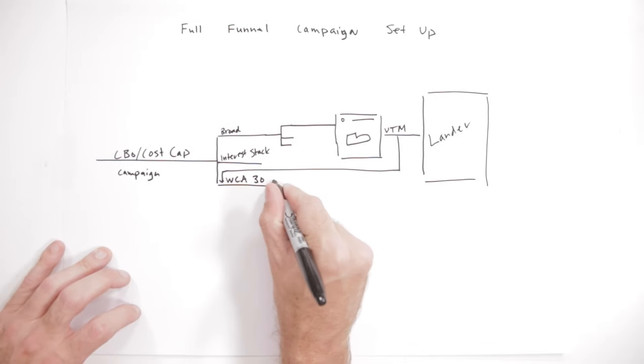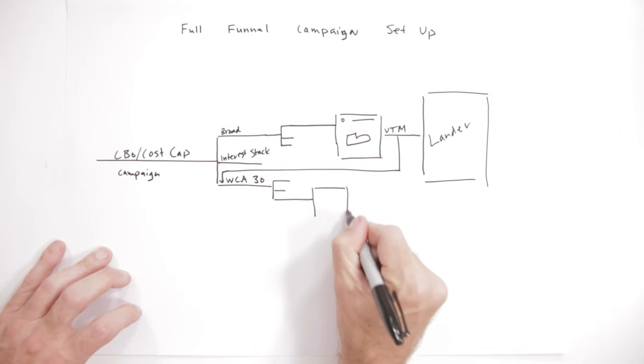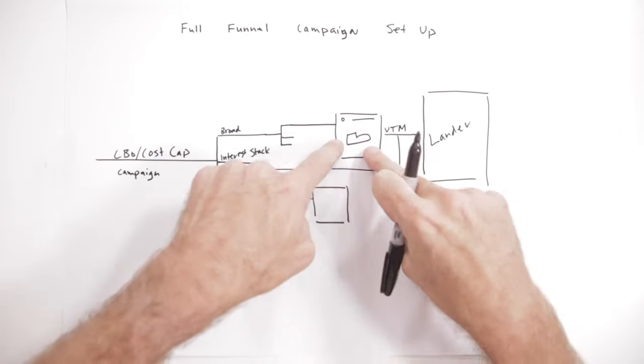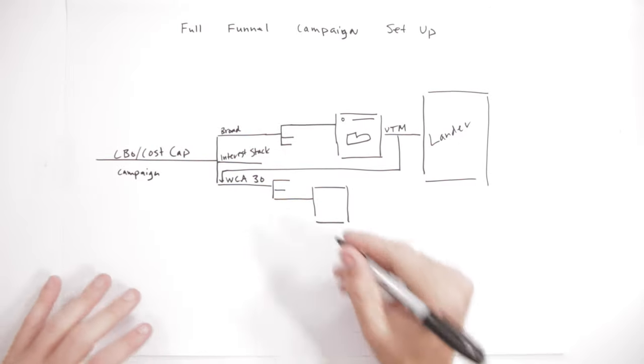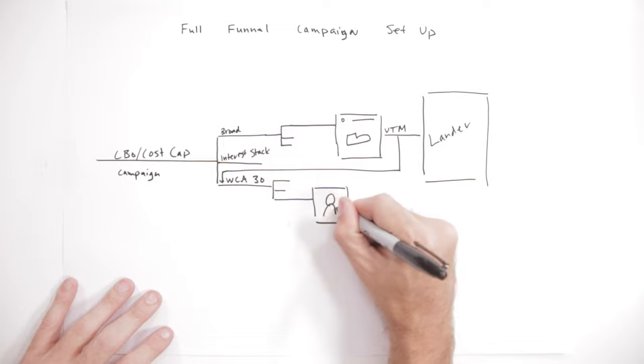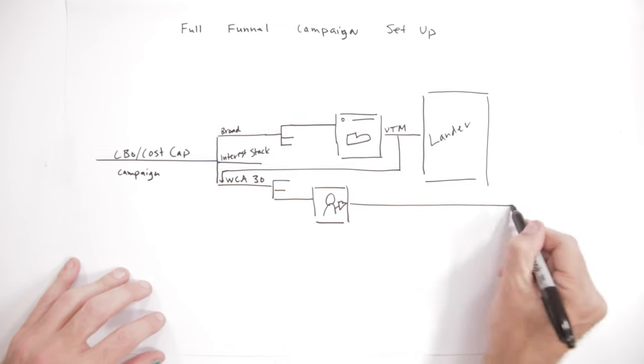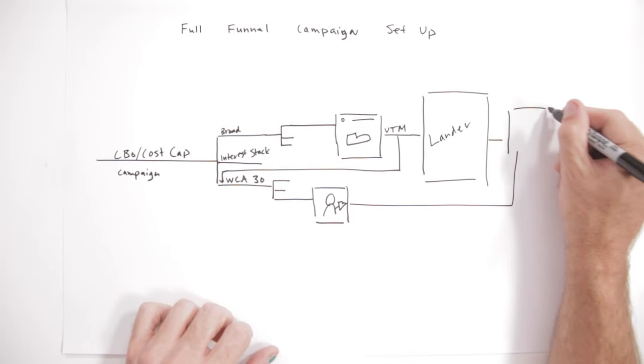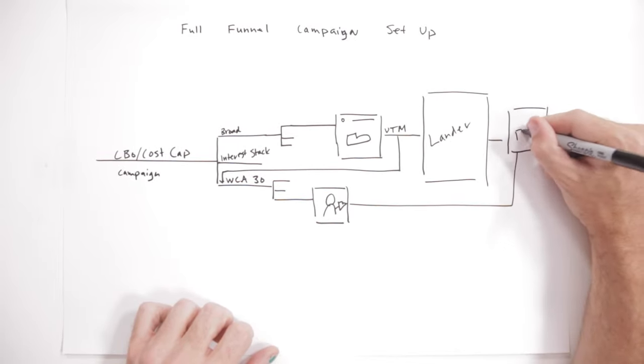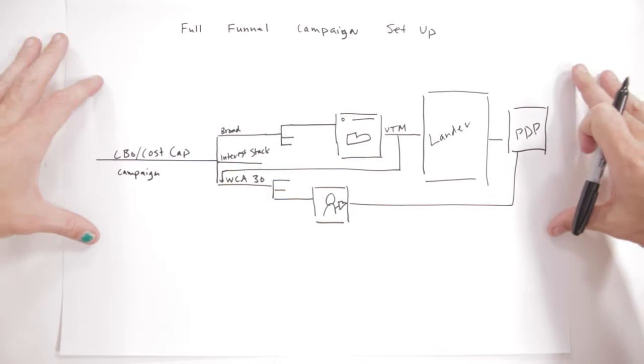And then inside my remarketing audience I can now build ads that take into consideration that somebody has seen this ad, they've been to this lander, and I know a lot about their state. So now I can design an ad where somebody, let's say it's a human, is talking about the product, and I can drop them straight to a PDP. So now what I have is a funnel that allows me to speak to the customer at every phase.